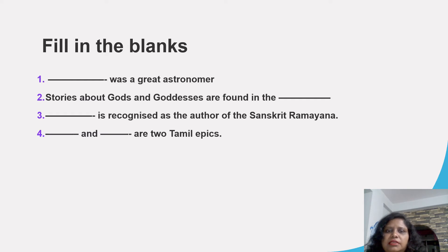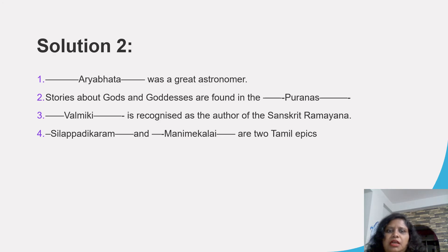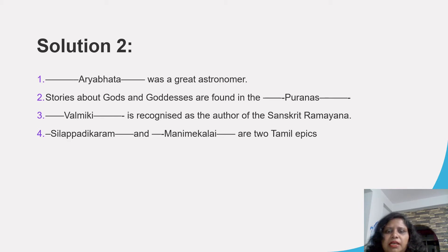Fill in the blanks. 1. Aryabhata was the great astronomer. 2. Stories of the Gods and Goddesses are found in the Puranas. 3. Valmiki is recognized as the author of the Sanskrit Ramayana. 4. Silappadikaram and Mani Mekalai are the two Tamil epics.